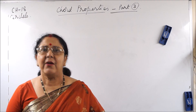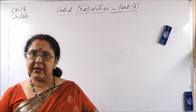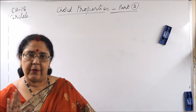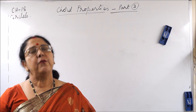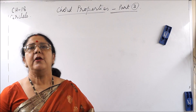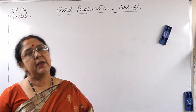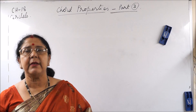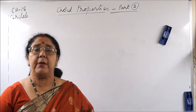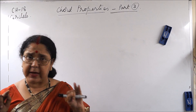Have a good day children. Now let us continue the chord properties. In part 1 and part 2 we have finished two theorems. In part 1 we learnt that the straight line drawn from the center of a circle bisecting a chord is perpendicular to it. In part 2 we learnt the converse: the perpendicular drawn from the center of a circle to a chord bisects the chord.